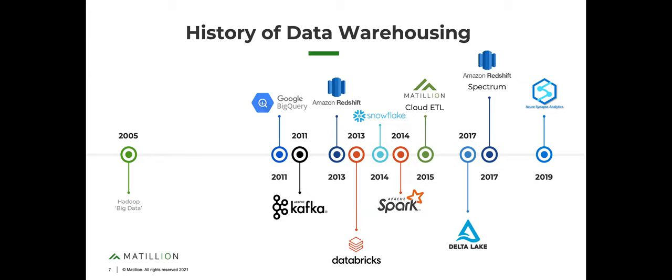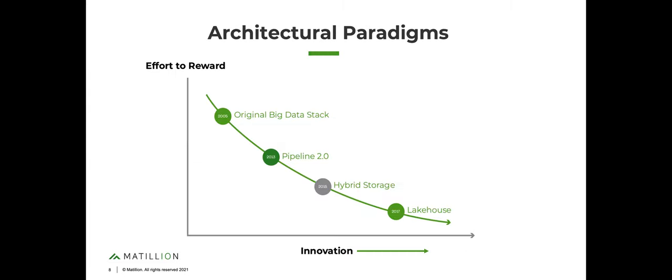Just a tremendous amount of innovation happening in the space today, which is great news for operators and designers, especially from an architecture perspective. We're seeing improvements with each new technology. Looking at the major architectural paradigms over the last 15 to 20 years, the effort-to-reward ratio has dropped dramatically as innovation has increased. So let's walk through each one of them and talk about why the lake house has come about and what problem it's trying to address.